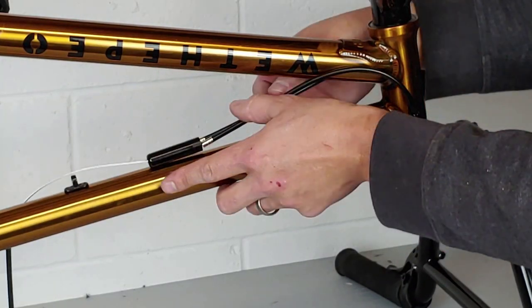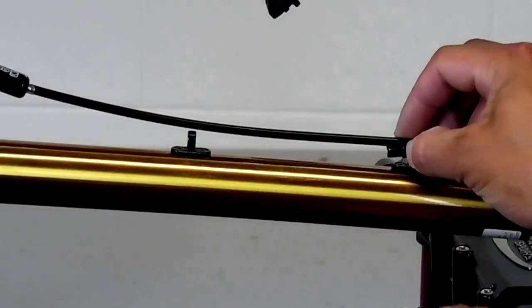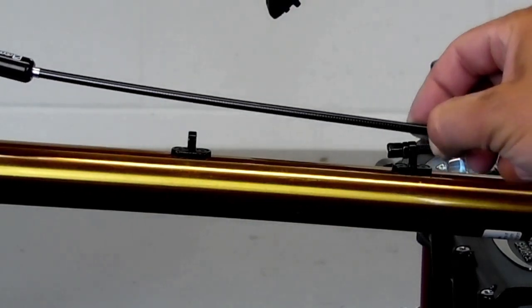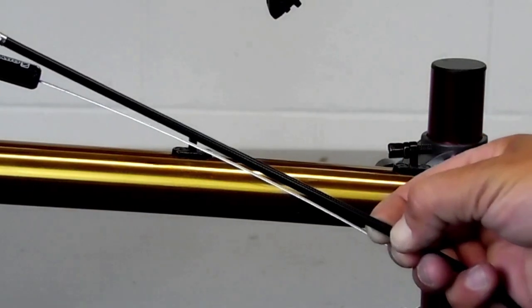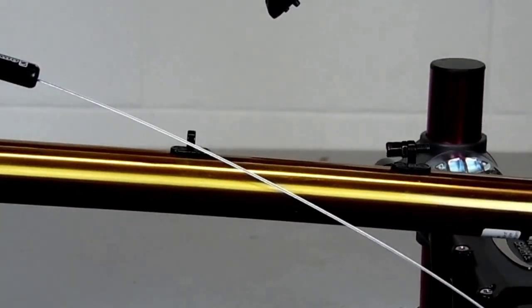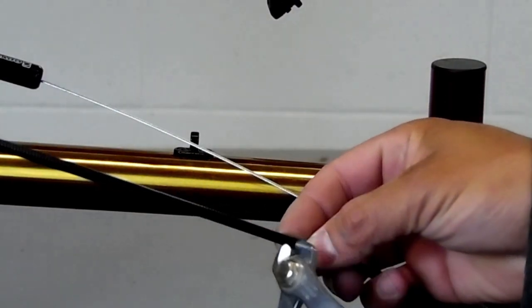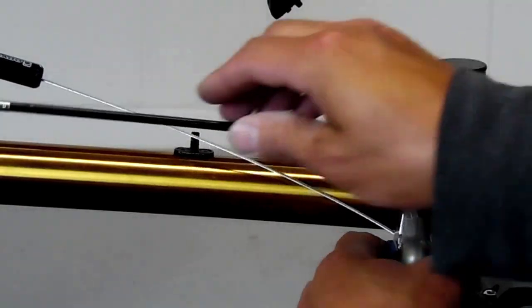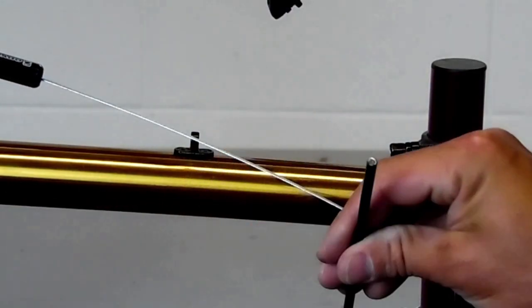The next thing we're going to do is custom measure and cut our lower cable. We're going to put the housing on, line it up about where we want it, mark it with our finger, and then remove the housing from the inner cable. It's very important you don't want to cut the inner cable - cut it to length and then reinstall it.